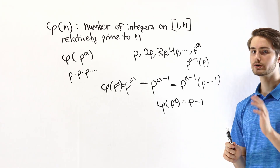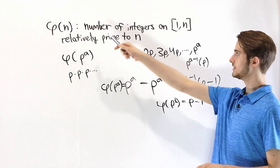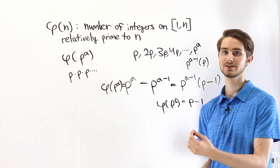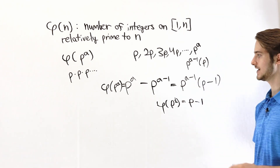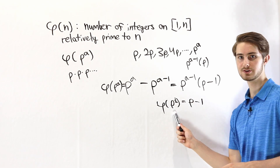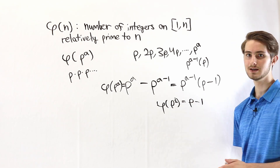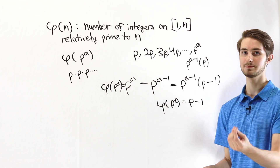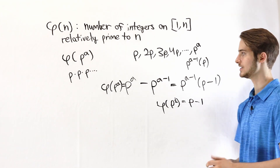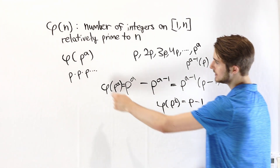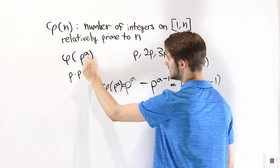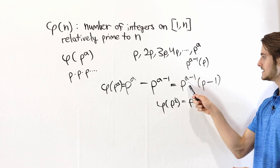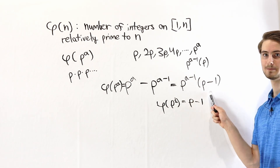So that is the Euler totient function. It counts the number of integers on the interval 1 to n that are coprime to n — that share no factors with n. For a prime number, the totient function of P equals P minus 1, since all numbers other than P share no factors with P. And the totient function of P to the power of some number A equals P to the A minus 1 times P minus 1.